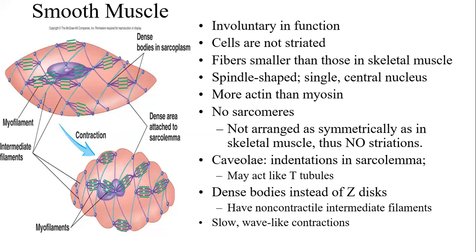Smooth muscle cells are smooth when viewed under a microscope. The fibers are smaller than those in skeletal muscles and are spindle-shaped. They contain a single nucleus that is centrally located, unlike skeletal muscle cells which are multi-nucleated with long fibers containing multiple nuclei. Smooth muscle cells have more actin than myosin, and there are no sarcomeres — no arrangement of thin and thick filaments producing striations.